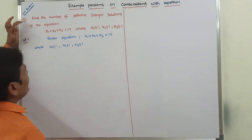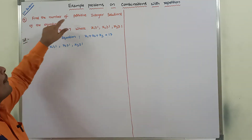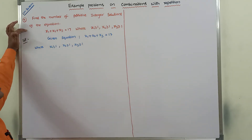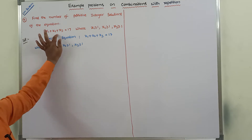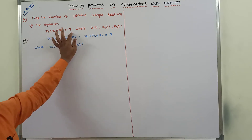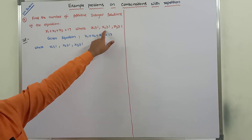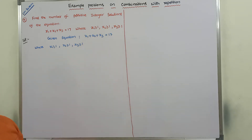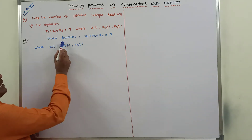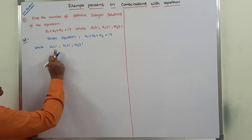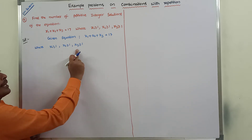Now what is the given problem? Find the number of positive integer solutions of the equation x1 plus x2 plus x3 is equal to 17, where x1 greater than or equal to 1, x2 greater than or equal to 1, and x3 greater than or equal to 1.